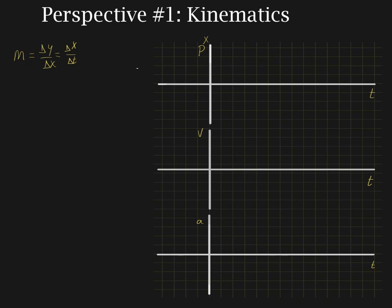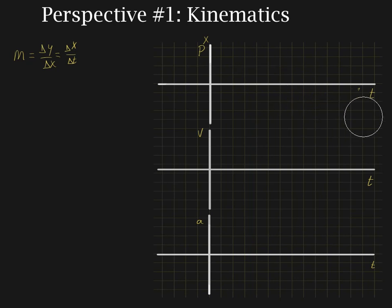The other thing that we tend to look at with graphs is the area underneath the curve. The area under the curve is the area between the line you draw and the X-axis, so the area under the curve could be above the X-axis and it could also be below the X-axis. On a position-time graph, the area under the curve doesn't mean anything — I'll mention that again in a couple of minutes.